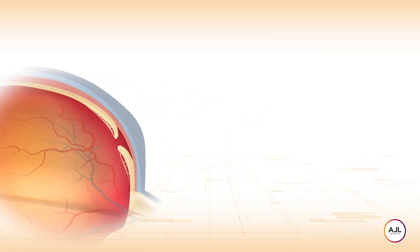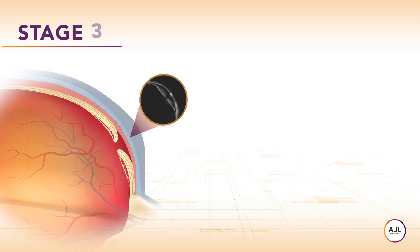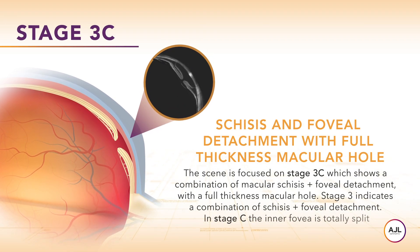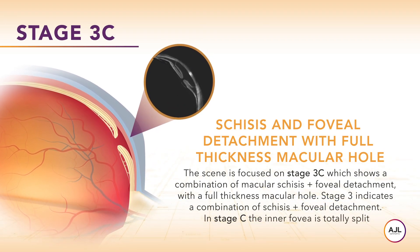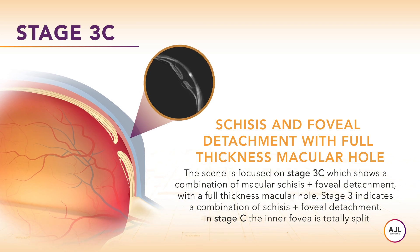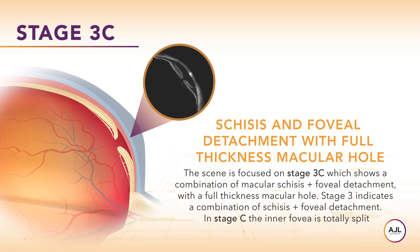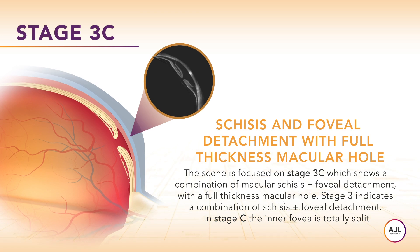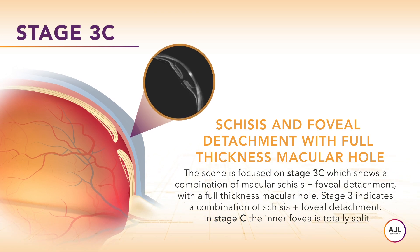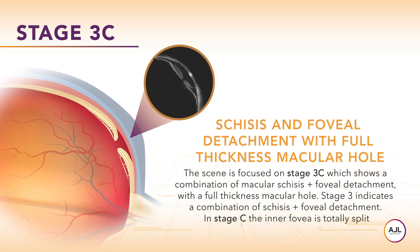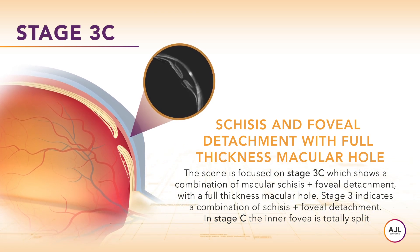Stage 3c shows a combination of macular schisis and foveal detachment with a full thickness macular hole. Stage 3 indicates a combination of schisis and foveal detachment. In stage C, the inner fovea is totally split.